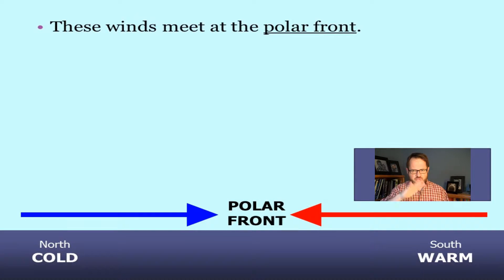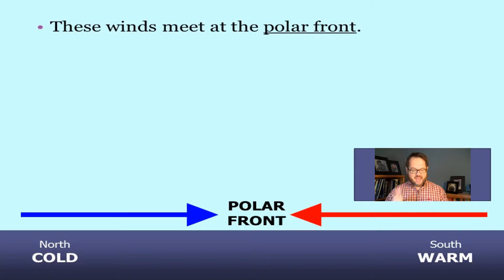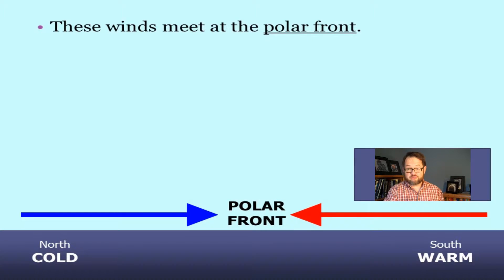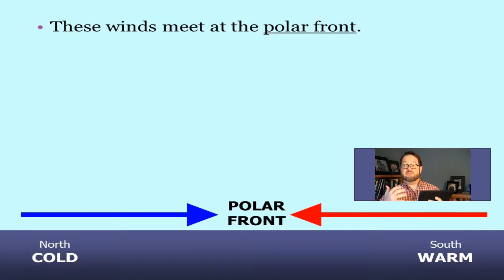You may or may not have already watched the lectures that say that could be a cold front, a warm front, or a stationary front. That's what those are — they are the boundary between cold air from the north meeting warm air from the south. The correct term for them in general is that they're a polar front.